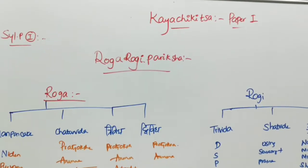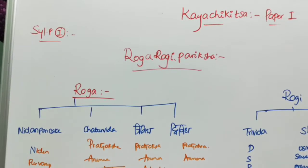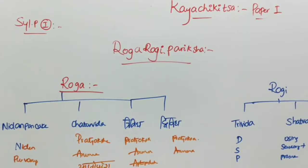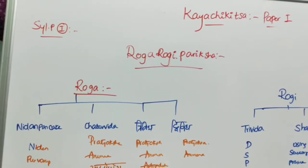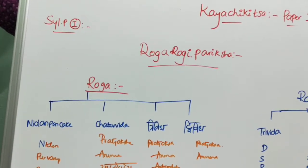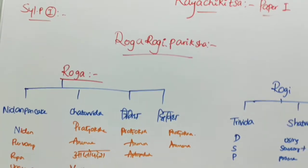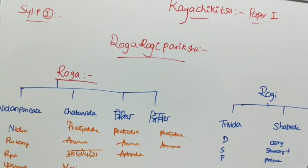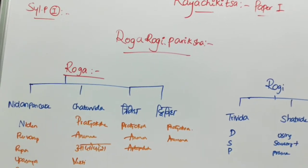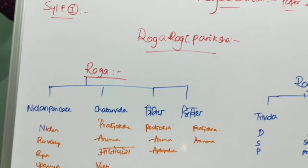This is the continuation of the previous video where we discussed what is Kaya, what is Chikitsa, its definitions and derivations. In the second video we discussed what is Chikitsa, Chikitsa Chetushpada, each Chetushpada definition, and the synonyms of the word Chikitsa. Now in this session, Roga and Rogi Pariksha will be dealt.